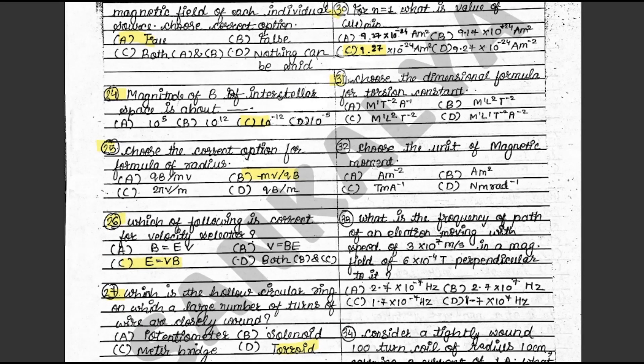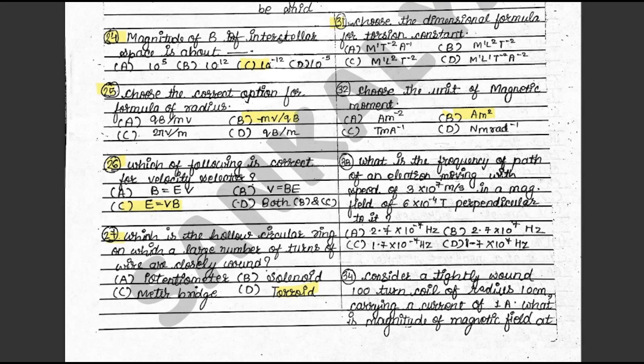Question 32: Choose the unit of magnetic moment. The answer is B: Ampere meter square. This is on textbook page 168. Question 33: What is the frequency of path of an electron moving with speed of 3 × 10⁷ m/s in a magnetic field of 6 × 10⁻⁴ Tesla perpendicular to it? The answer is D: 1.7 × 10⁷ Hz. This is in the textbook illustration 3.